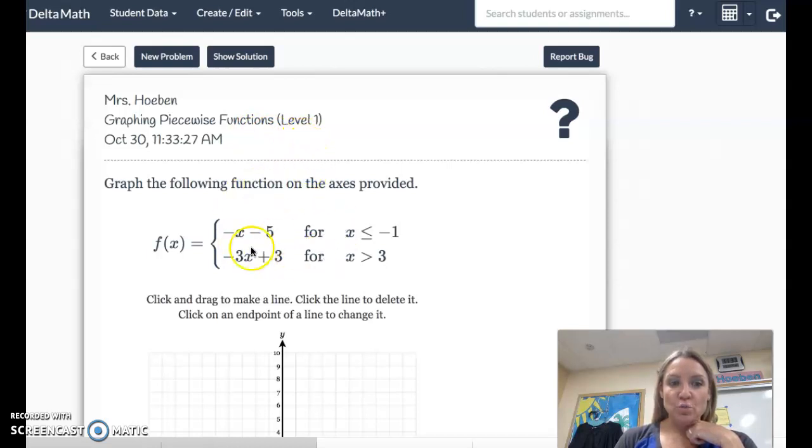So there are two parts to this piecewise that are going to be pieced together. When x is less than or equal to negative 1, we're going to graph the line negative x minus 5. And when x is greater than 3, we're going to graph the line y equals negative 3x plus 3.